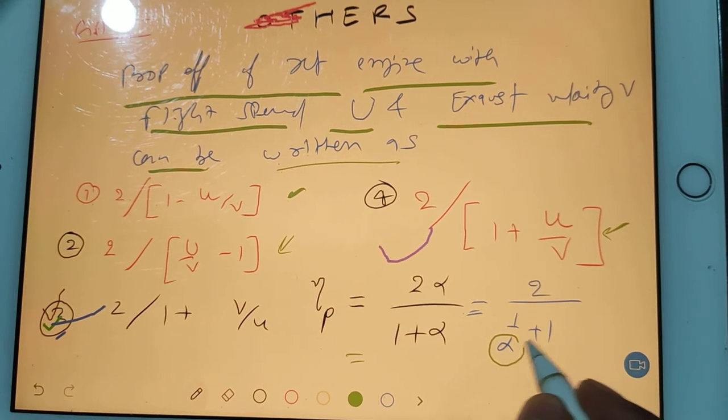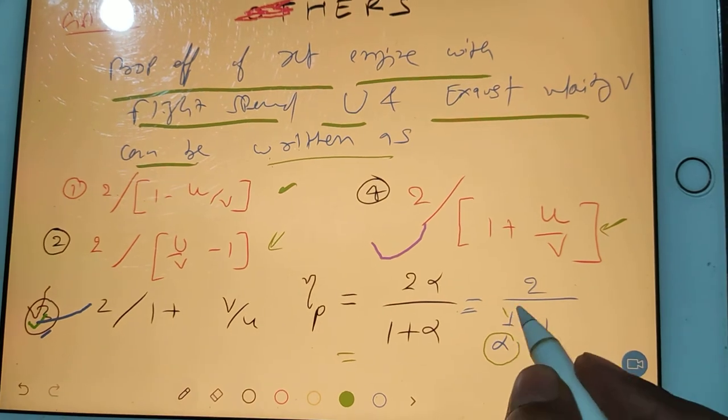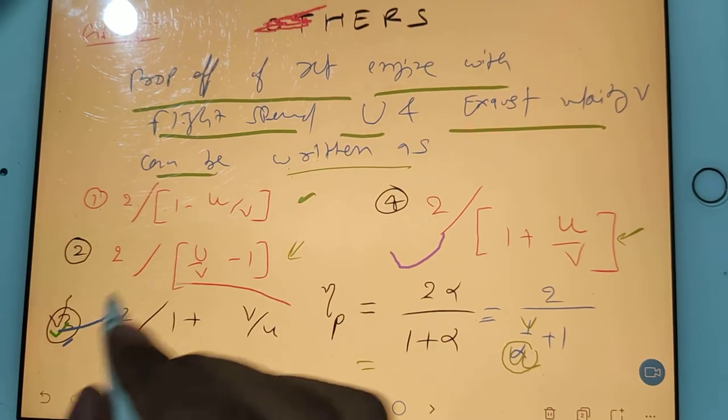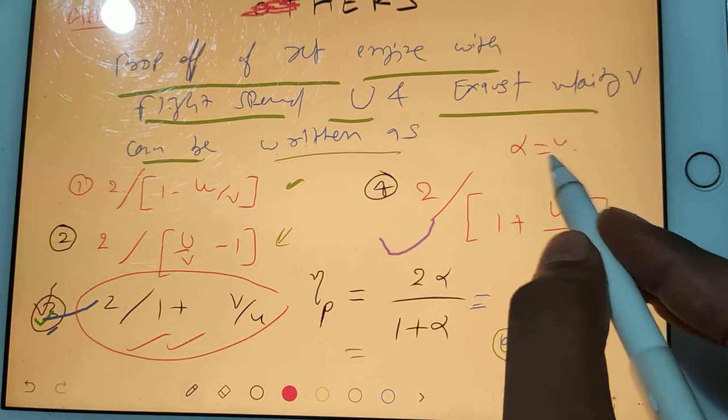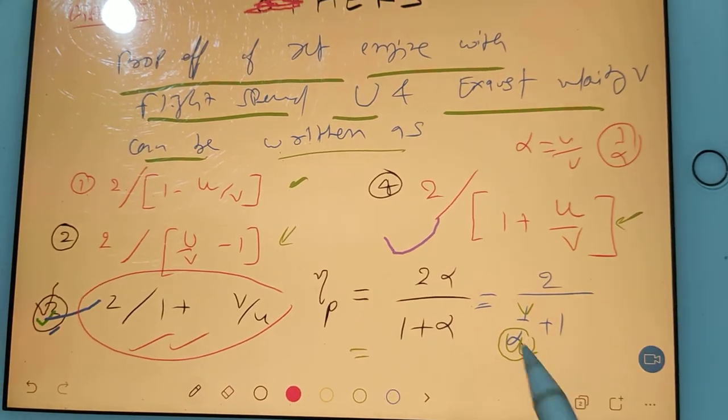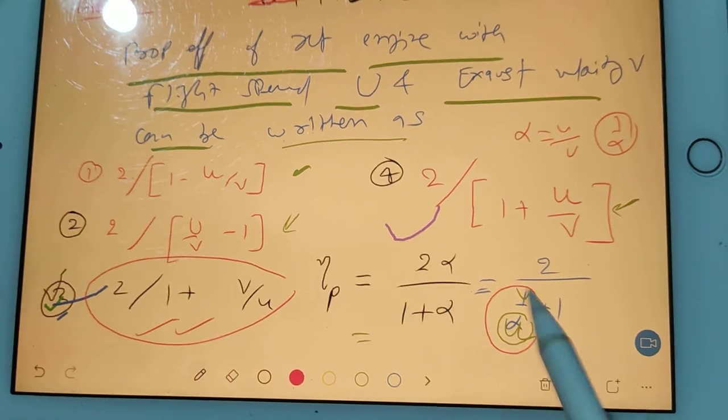So this option is correct, third option is correct. Because alpha is u/v, so 1/α is this part, v/u. So third option is correct.